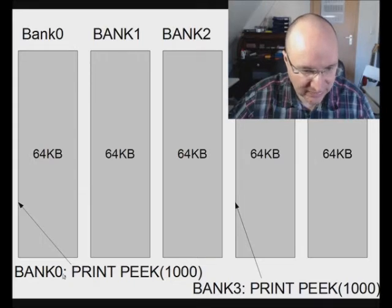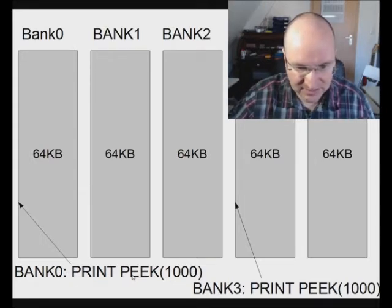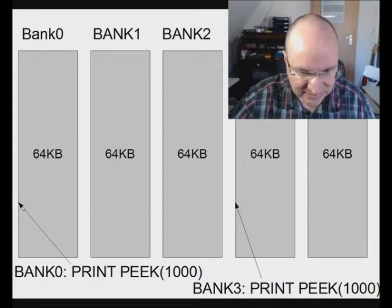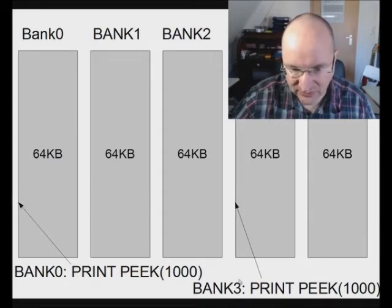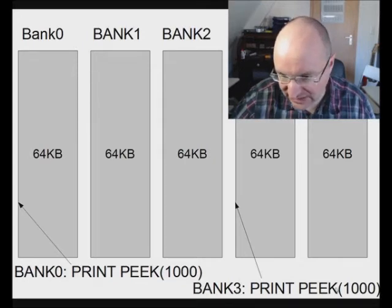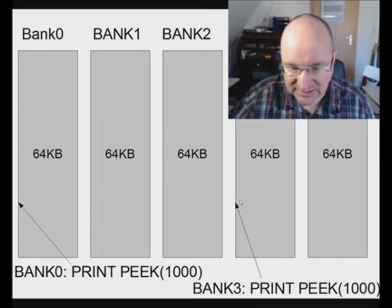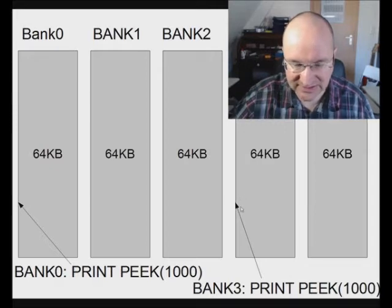For example, if you have switched to bank zero and PEEK address 1000, you get the value stored there. But if you had switched to bank three before the same PEEK command, you would get the value stored at address 1000 in bank three instead.